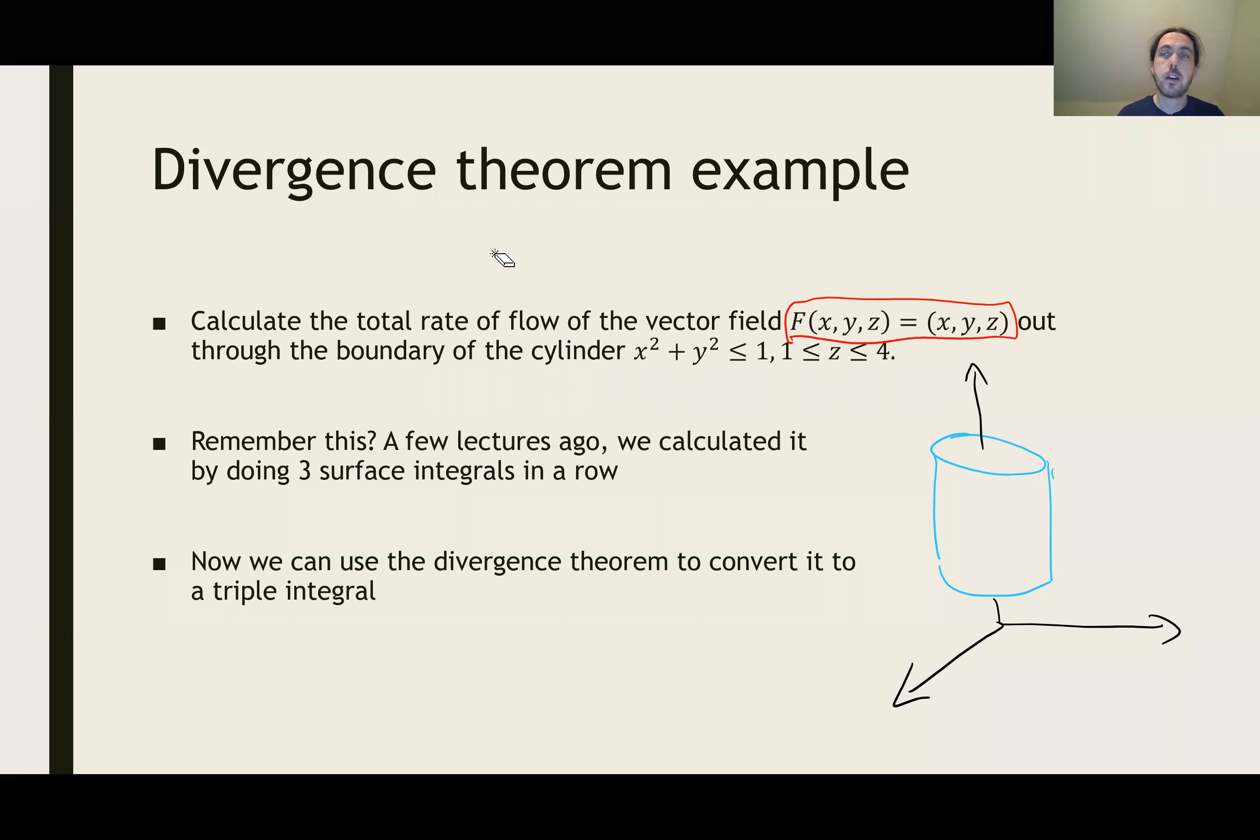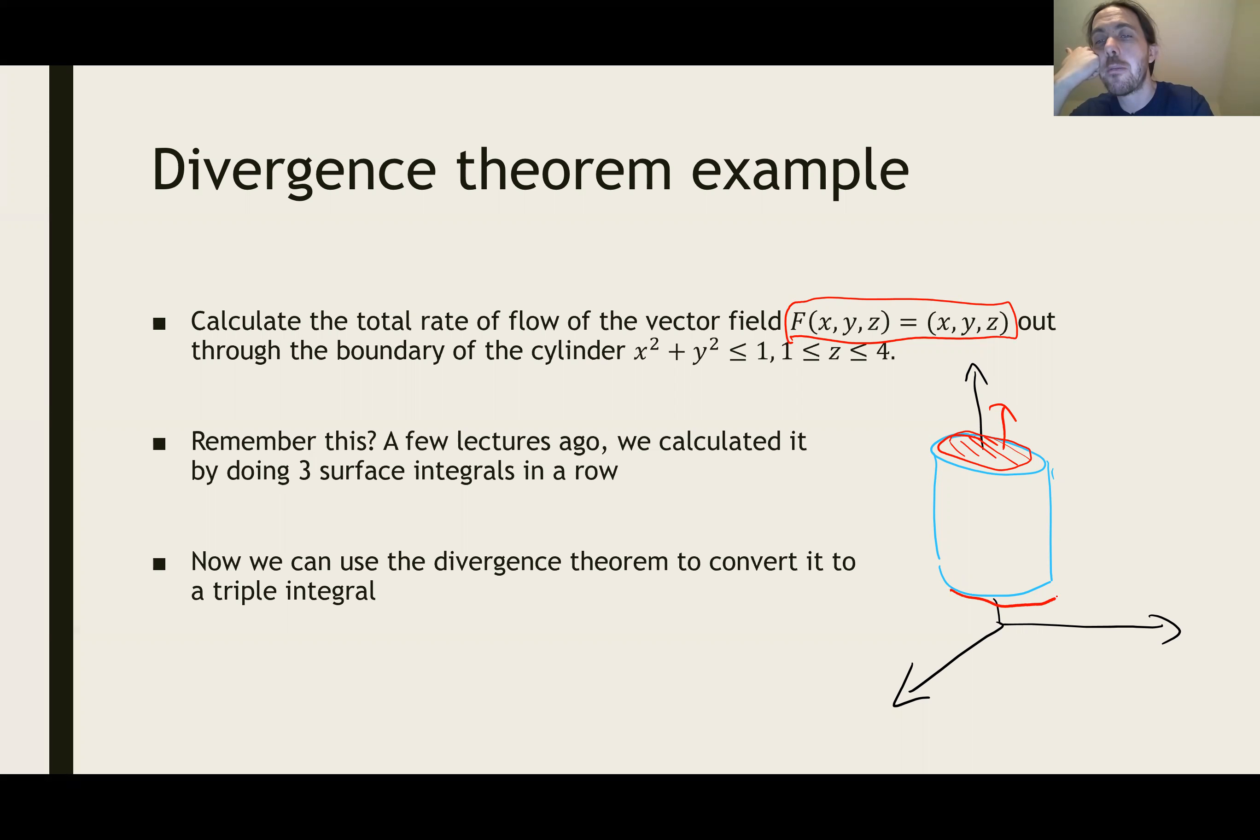When we did this a couple of lectures ago, we said this cylinder has three boundary components: a boundary at the top, a boundary at the bottom, and the sides. We calculated the flow out through each of those and added the three contributions up. It took some effort, like a couple of slides, to do that.